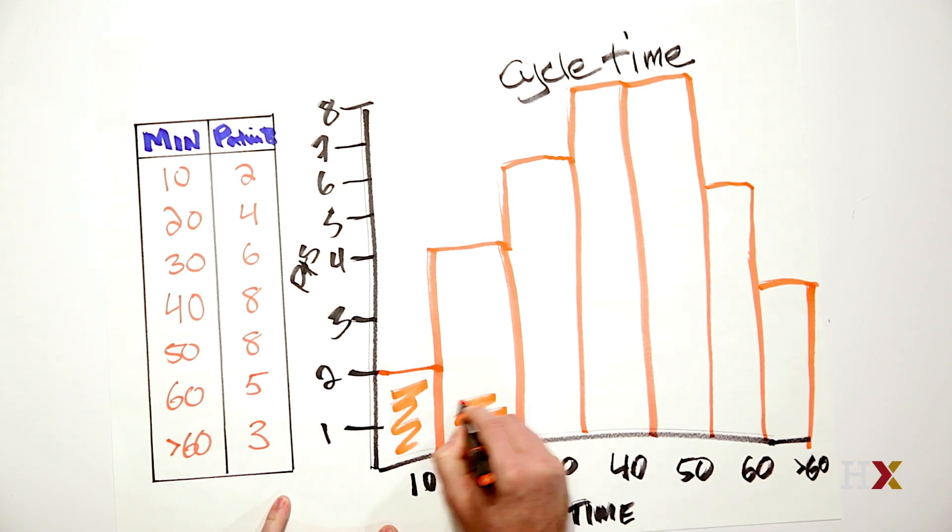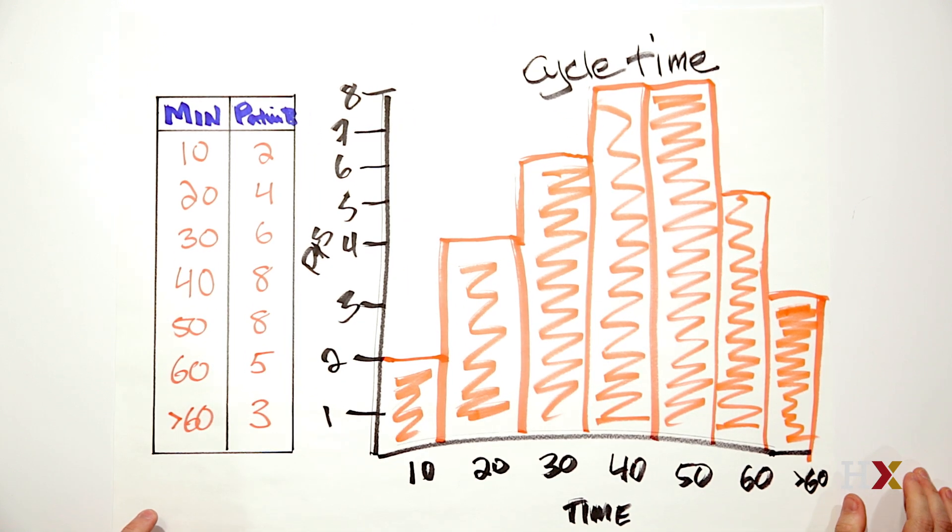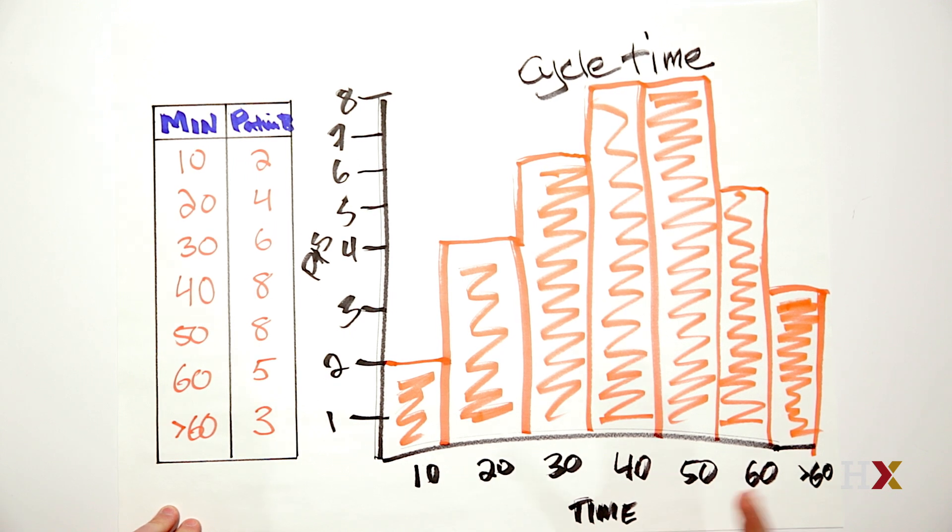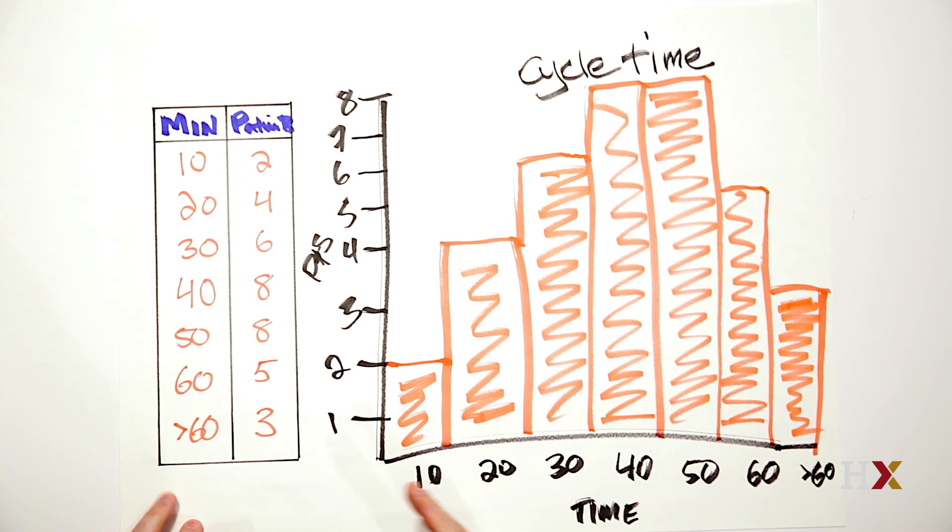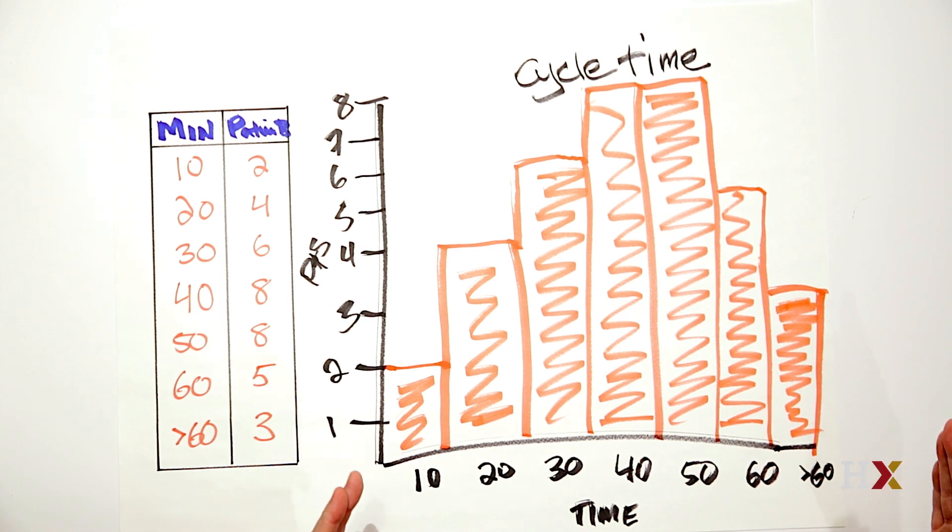Just color it in so it's a little bit easier to look at. Now as you look at your cycle time data, you can look for the number of patients that had cycle times in each of the various time intervals. Once you've plugged in all the data, you'll see the distribution of the data and better understand the variation that exists within your process.